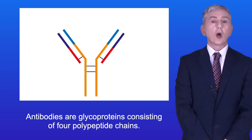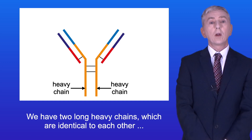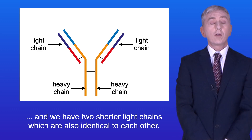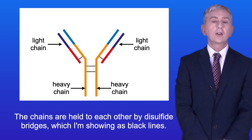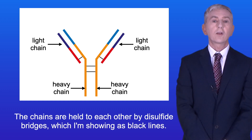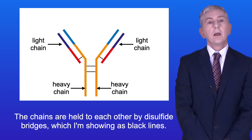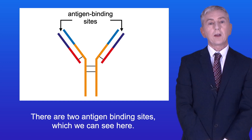Antibodies are glycoproteins consisting of four polypeptide chains. We have two long heavy chains, which are identical to each other, and two shorter light chains, which are also identical to each other. The chains are held to each other by disulfide bridges, shown here as black lines. There are two antigen binding sites, which we can see here.